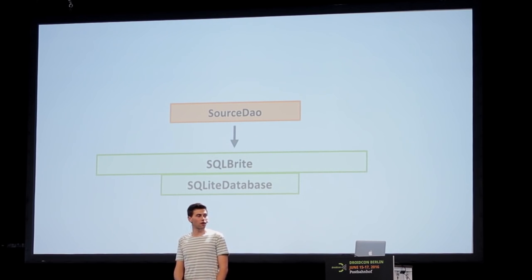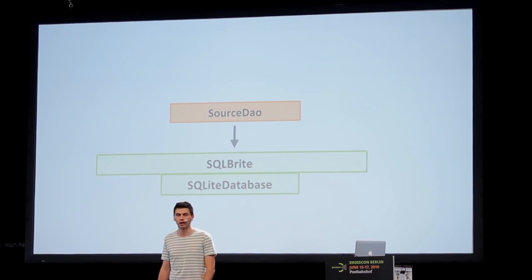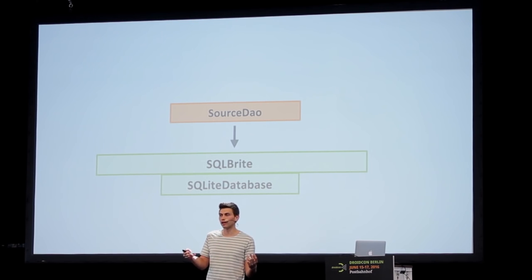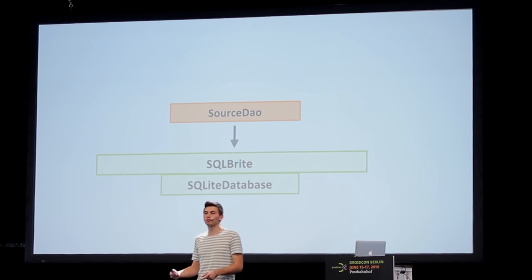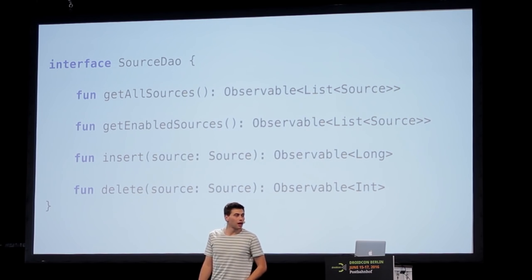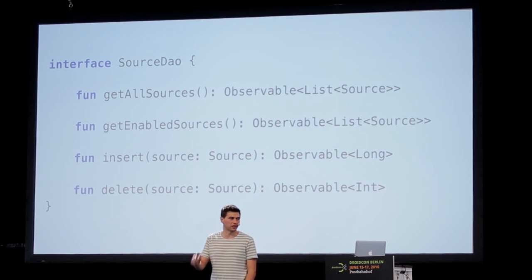Our SourceDAO interacts with our SQLite database and we use a library from Square called SQLBrite, which is a reactive wrapper around it. It provides a way to say 'query' — pass in a SELECT statement and get an Observable of a list of items out. The SourceDAO is written in Kotlin and offers: get all sources, enable or disable a source, and insert and delete.